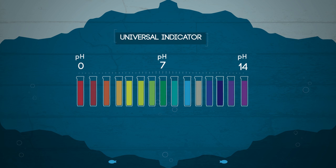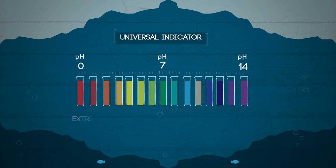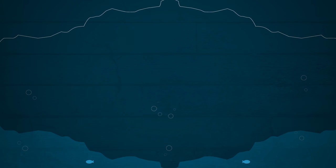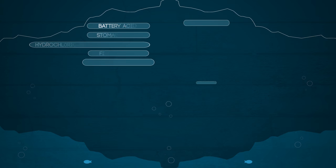Again, it can be used as a liquid or a paper. The pH runs from 0 to 14, with 0 being extremely acidic, 7 being neutral, and 14 being extremely alkaline.